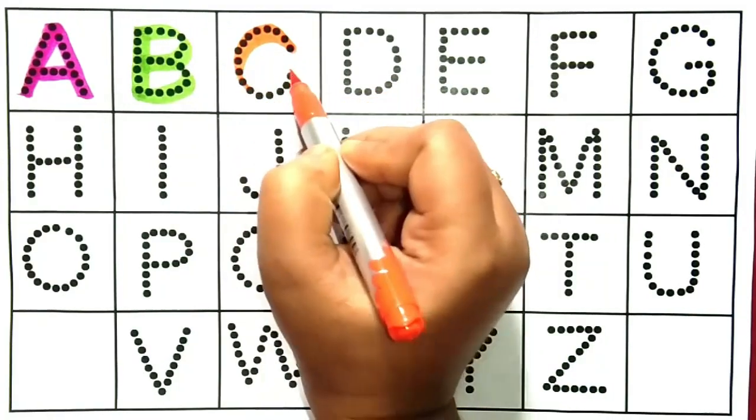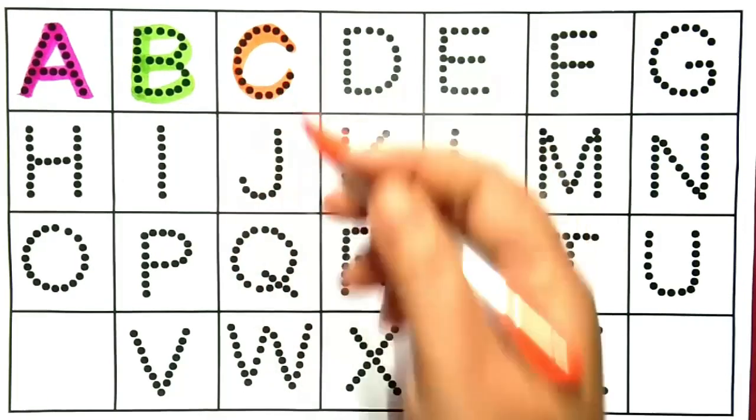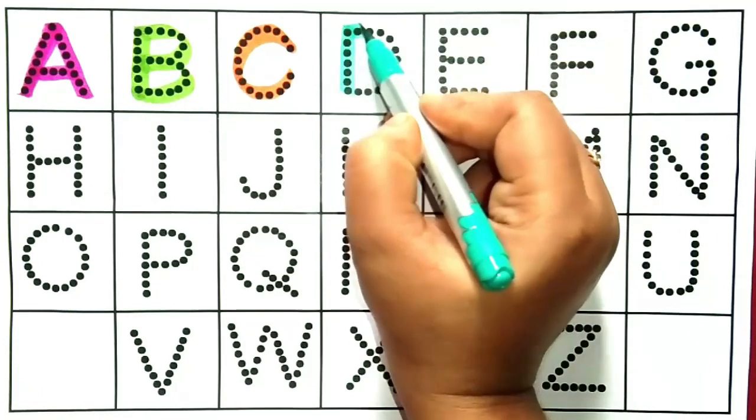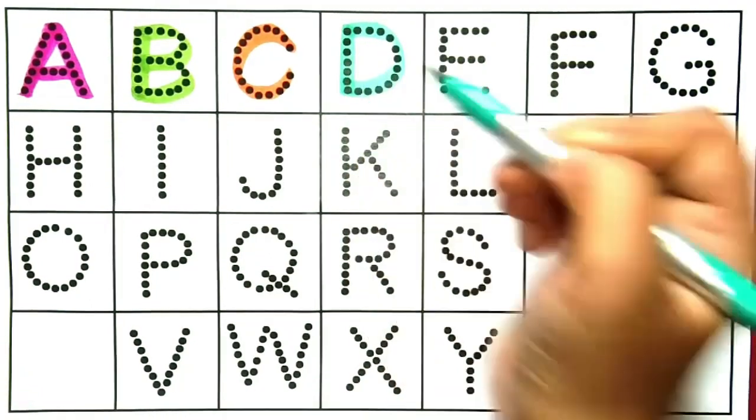C for crocodile. A, C, D, E, D for dog, D for dog, yeh hai D.